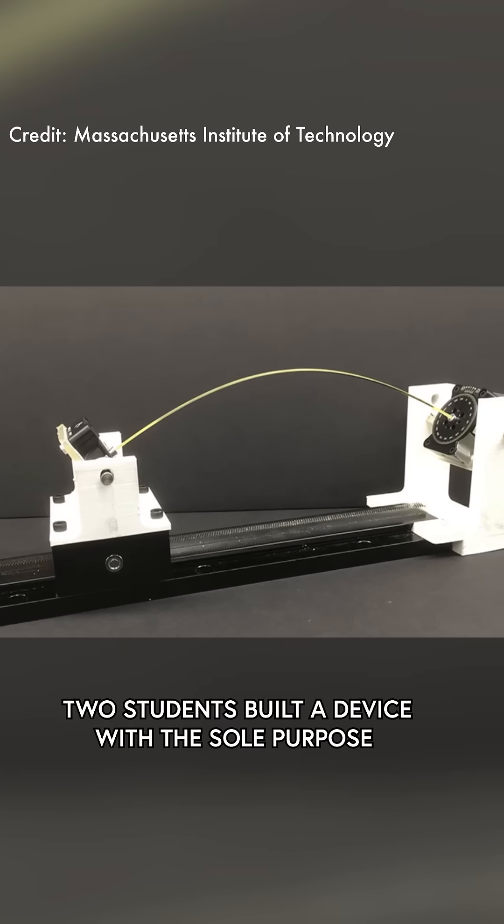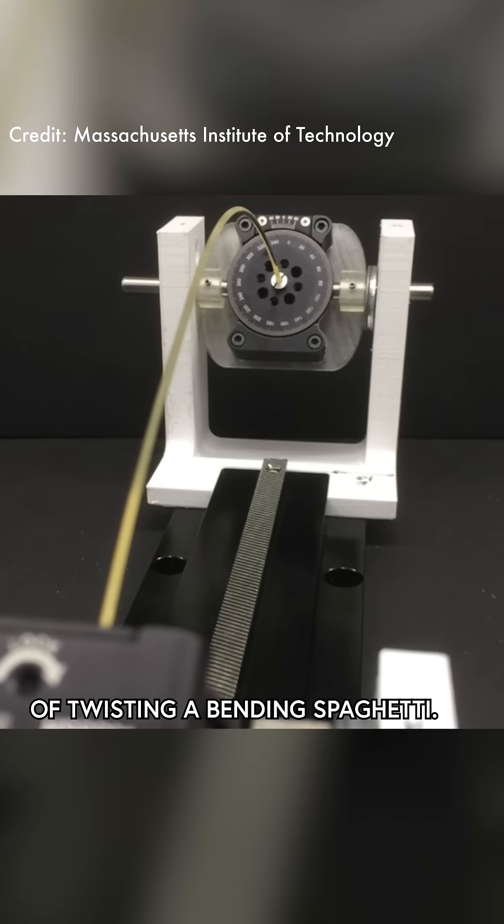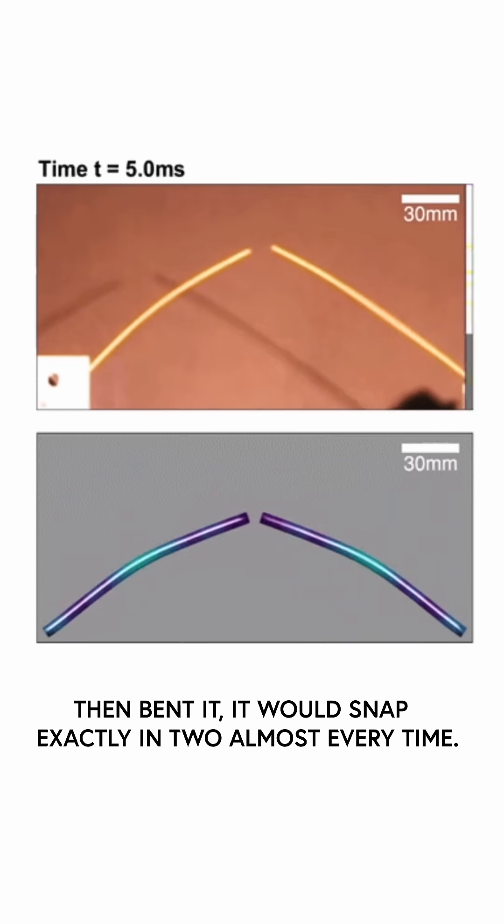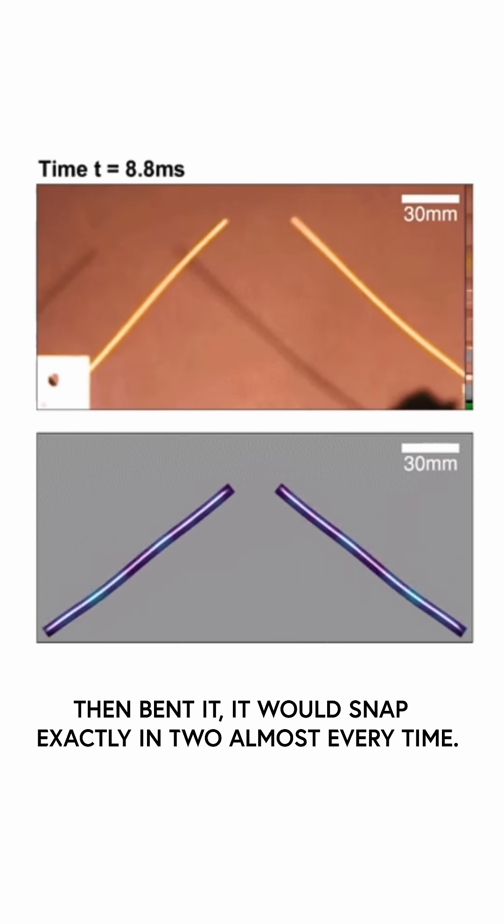Two students built a device with the sole purpose of twisting and bending spaghetti. They found that if they twisted it to almost 360 degrees, then bent it, it would snap exactly in two almost every time.